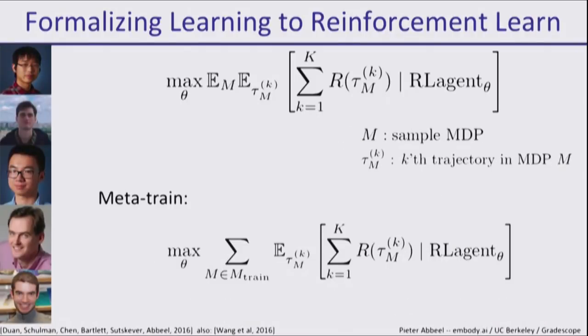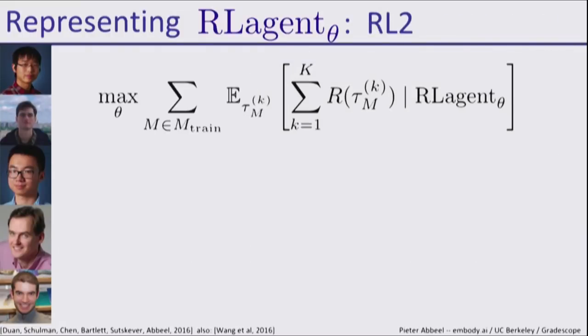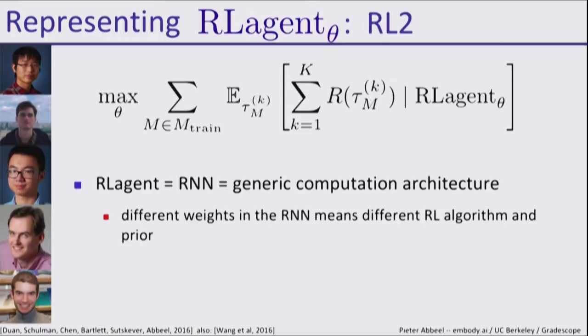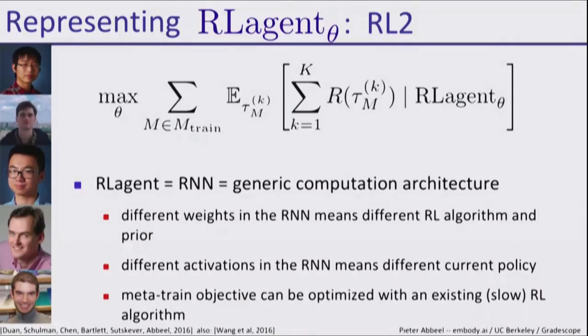We need to make some choices for what we put underneath. One thing we could put is an RNN. The beauty of putting an RNN underneath is that it's very generic. It can encode any algorithm, prior about environments and so forth. If you look more deeply, the weights in the RNN would correspond to both the RL algorithm and the prior over environments somehow included in there. The different activations that the agent has over time would correspond to it adapting its policy as it's acting in a new environment.